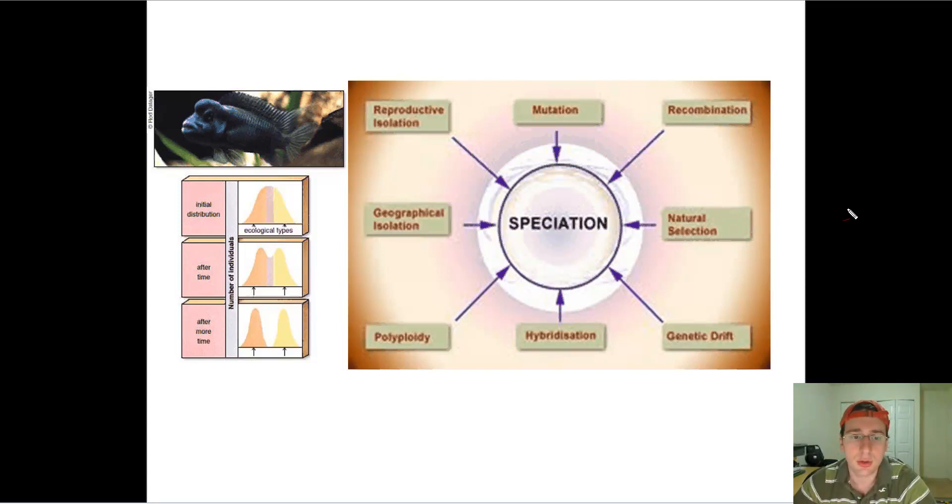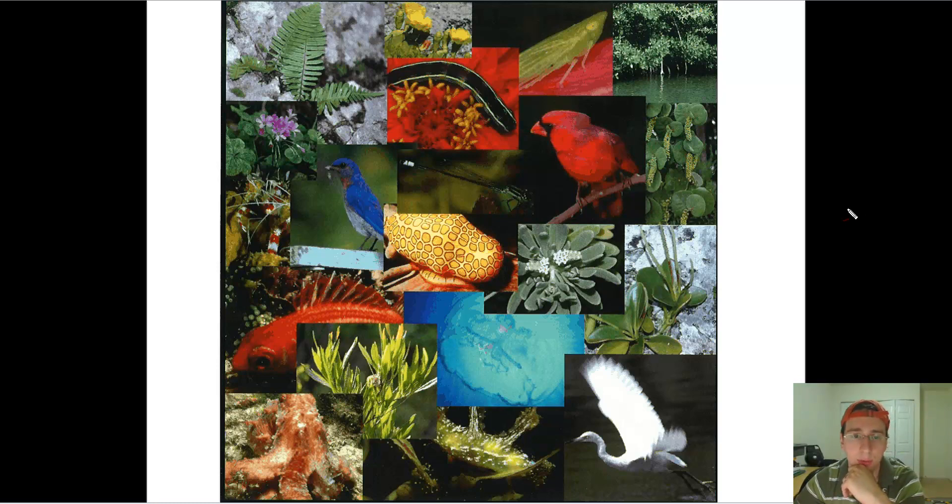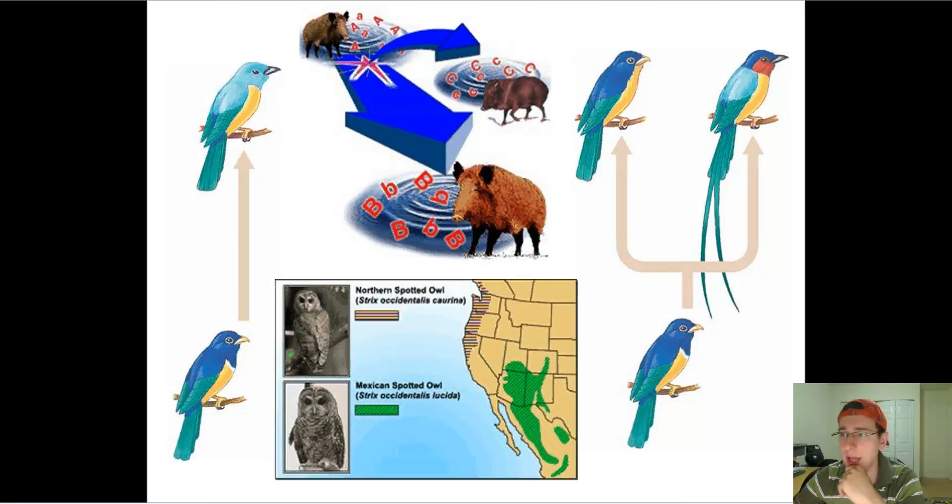So isolation is going to be crucial for speciation to take place. For all the differences that you see in life to occur, these life forms will have to be separated from each other so that they can evolve separately from each other. And this could happen in one or two ways.